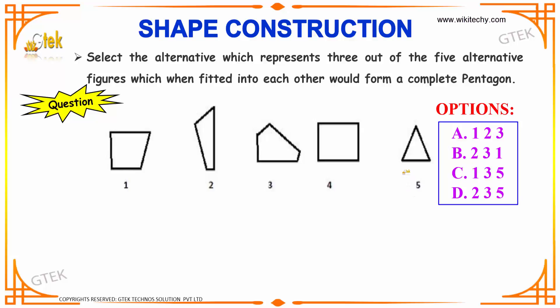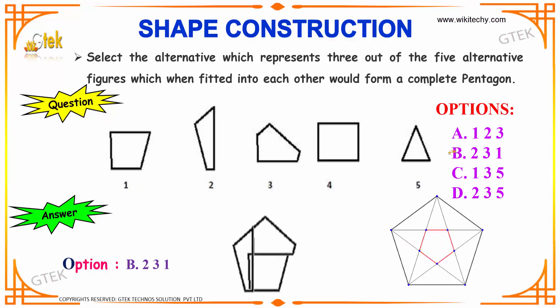What could be the answer? Let us see. Option B: 2, 3, 1. By combining the alternatives 2, 3, and 1, we can construct a complete pentagon.